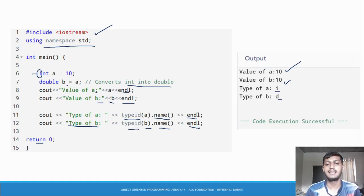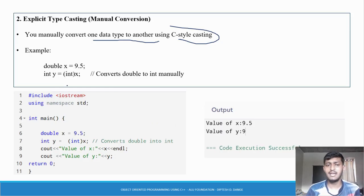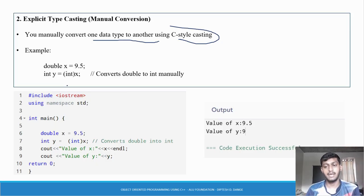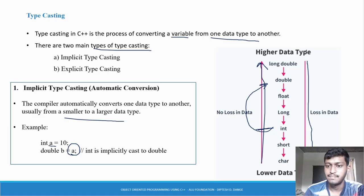Now explicit type casting — same concept, converting one data type to another data type. When we are converting from a larger data type to a smaller data type, we use explicit type casting — we have to write the code manually. For example, converting from double to integer.